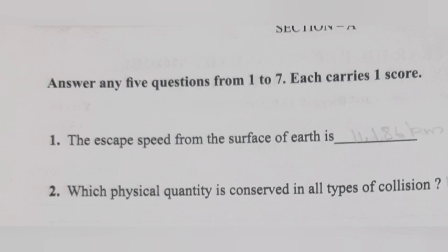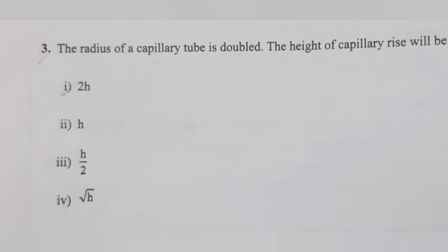Question 1: The escape speed from the surface of Earth is - Answer: 11.2 km per second. Question 2: Which physical quantity is conserved in all types of collision? Answer: Linear momentum. Question 3: The radius of capillary tube is doubled, the height